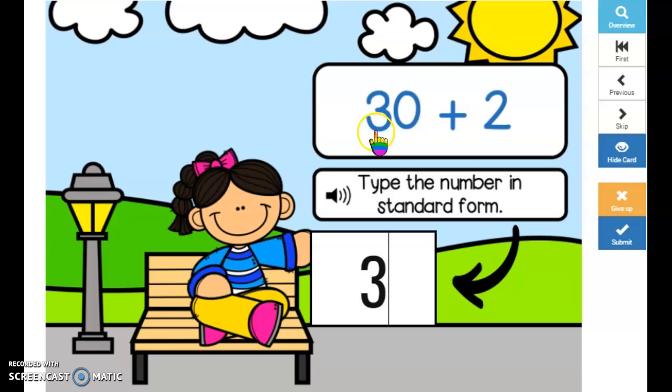So we take that 3 plus that 2 to make 32. Type that, press submit.